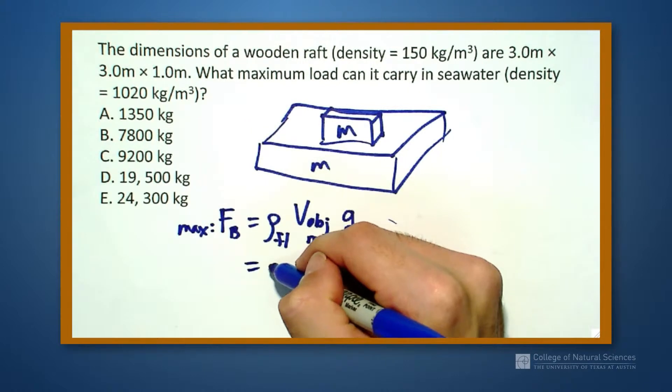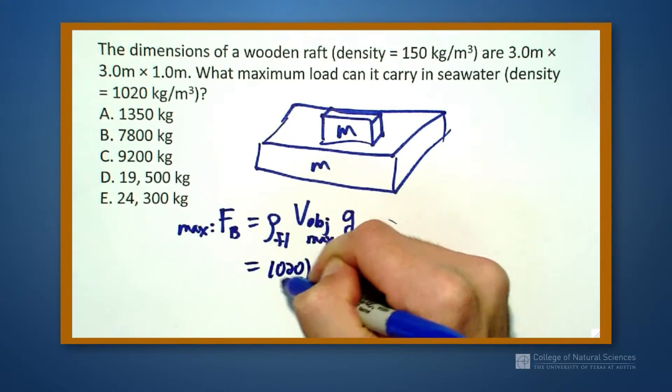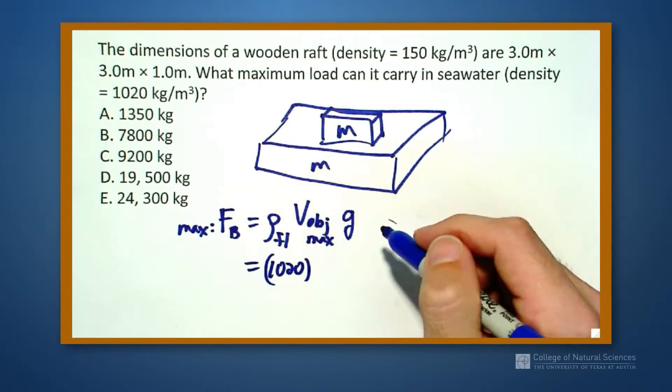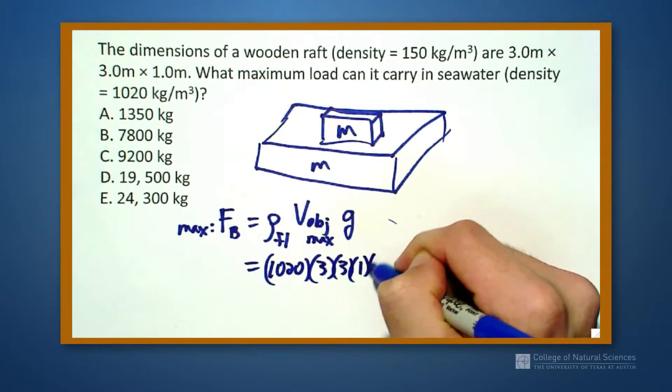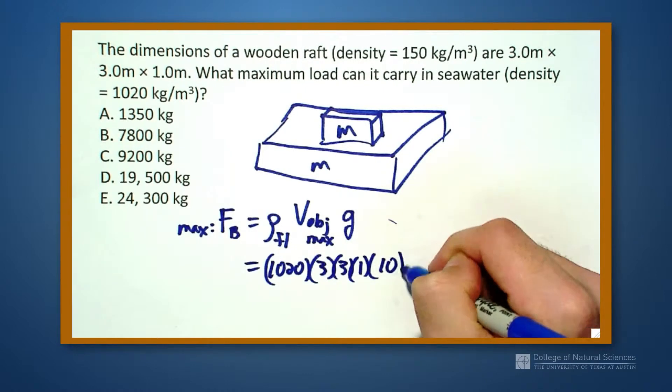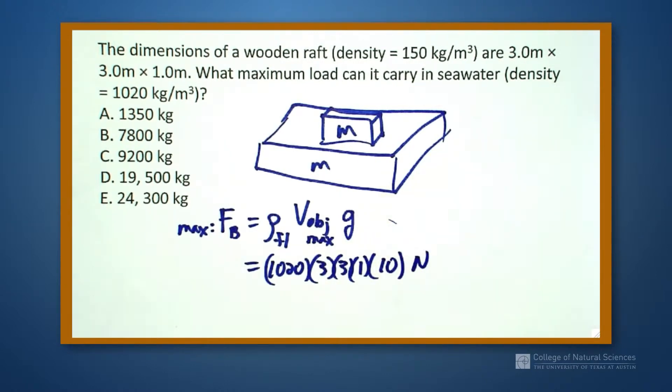So this is just going to be the density of the fluid, so 1,020. The volume of this is going to be 3 times 3 times 1, and times the 10 meters per second squared, and that's going to give me units of newtons.